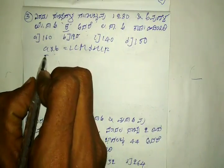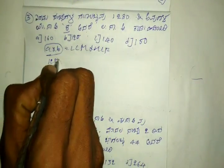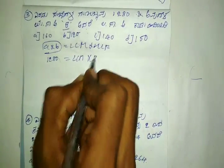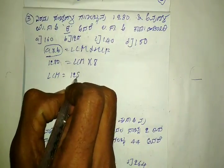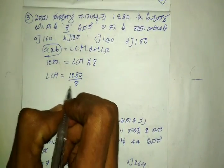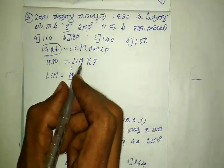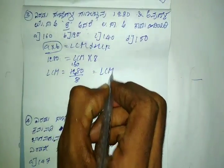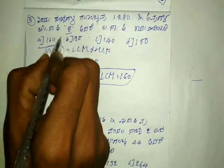So, the product is 770. LCM is 580, HCF is 580. LCM is 160. This is the right answer. Next question.